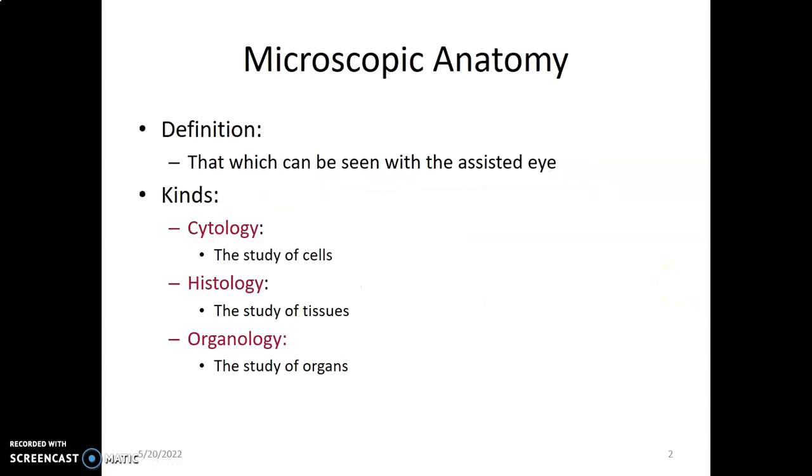Microscopy is just what you are able to see with an assisted eye, so it could be a light microscope or electron microscope. We have the study of cells, which is cytology, the study of tissue, histology, and organology.